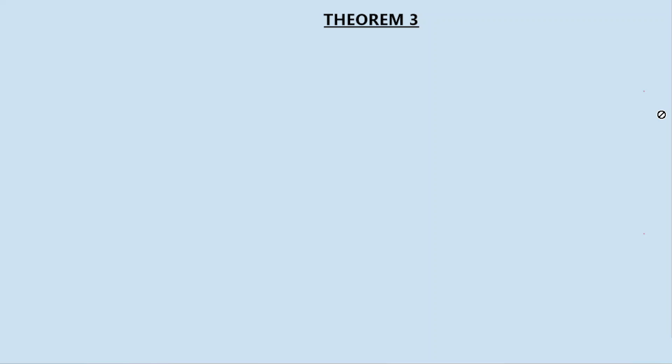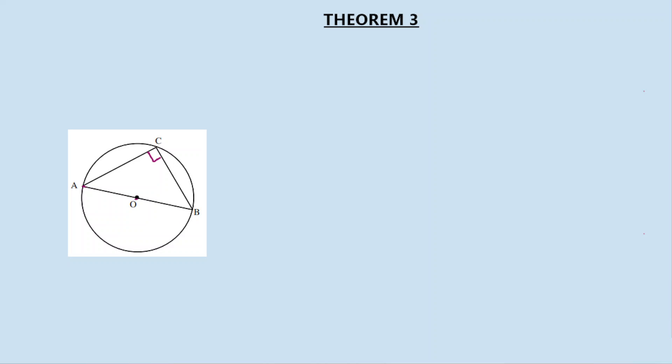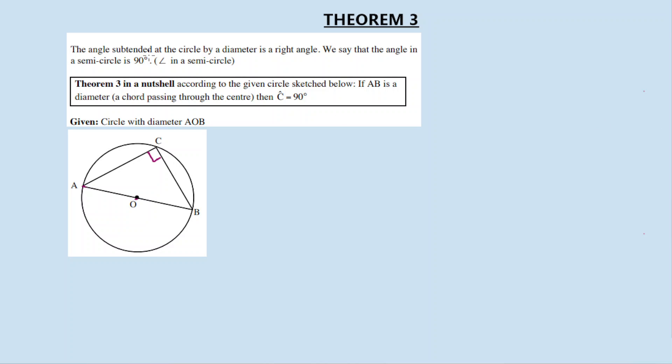Theorem number three — in the description box are links for other theorems we are discussing for this Grade 11 Euclidean geometry. I recommend you watch the previous videos in order to understand Euclidean geometry. Theorem number three states: a diameter subtends a right angle, or a 90-degree angle. The angle subtended at the circumference by a diameter is a right angle. We say the angle in a semicircle is 90 degrees.